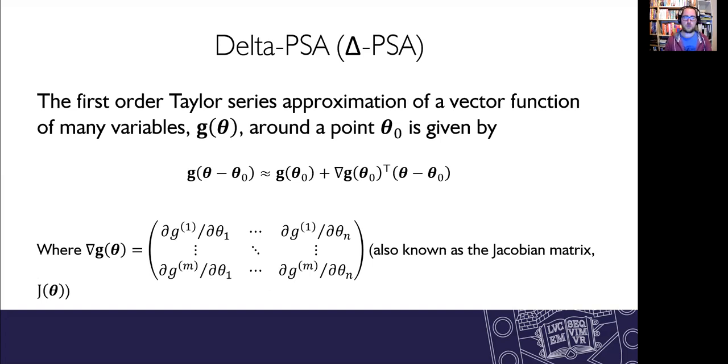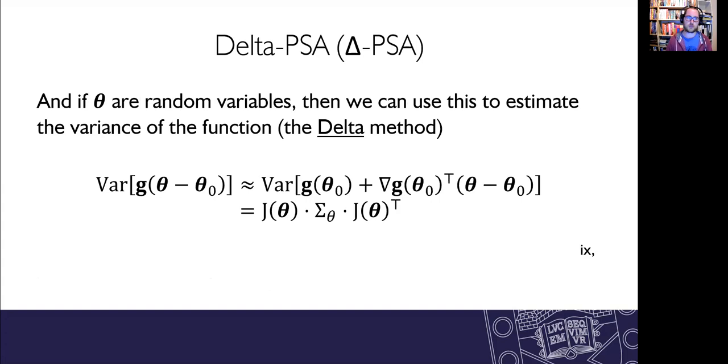Then the first order Taylor series of that vector function around a given point is determined by the grad of that function, which is the partial derivative of its various components against the different parameters. That's also known as the Jacobian matrix. And so when we have these theta being random variables, we can use this to estimate the variance of the function and this is called the delta method. It's used quite often in statistics and that's why this method is called the delta PSA method.